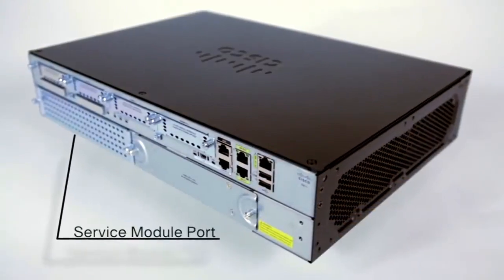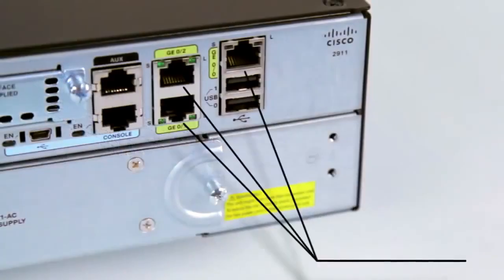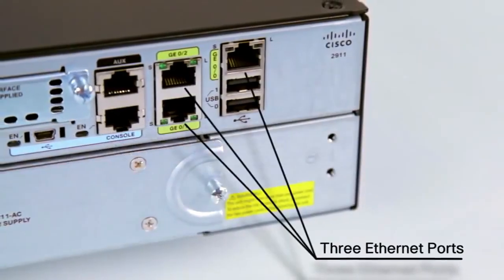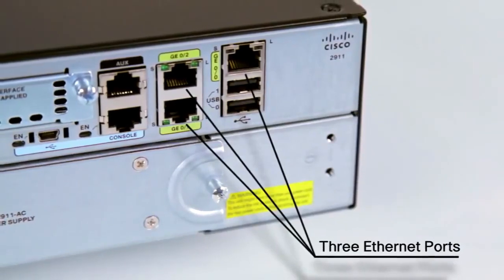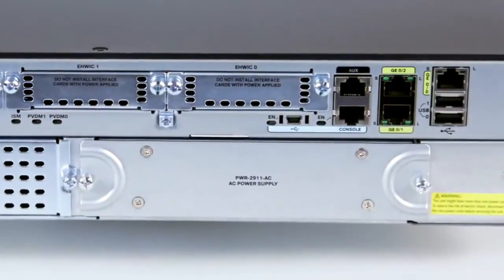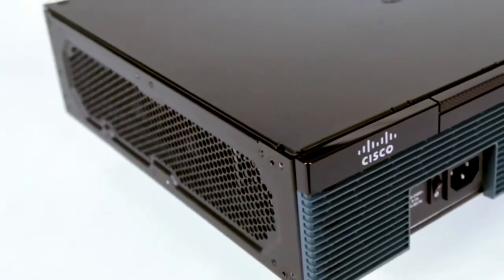The 2911 gives you one service module slot, another gig ethernet port for a total of three onboard plus NEBS compliance, external power supply options with a remote power shelf, and an optional air filter for deployment in rugged environments.